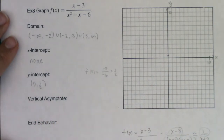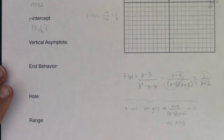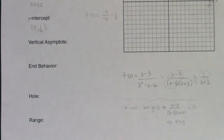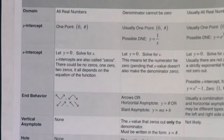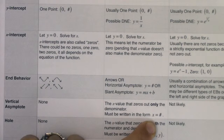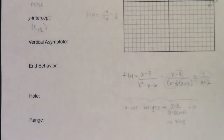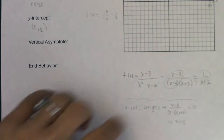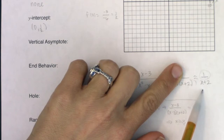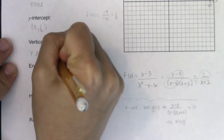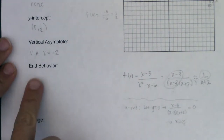For a vertical asymptote, I look at my function: is there a value of x that zeroes out just the denominator? Going back to the trait table — if I want to find a vertical asymptote I need an x value that zeroes out only the denominator, written in the form x equals a number. Three and negative 2 both zero out the denominator. Three also zeroes out the numerator, but negative 2 only zeroes out the denominator. So I have a vertical asymptote specifically at x equals negative 2.